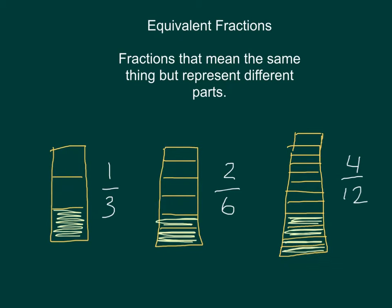When looking at this example, one-third, two-sixths, and four-twelfths all mean the same thing. But when I look at the denominator, I can tell that these fractions are representing different parts. In this case, one-third represents one out of three pieces.